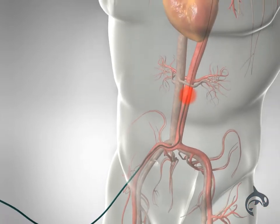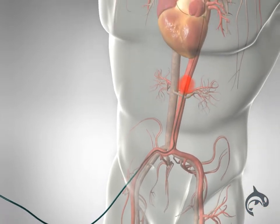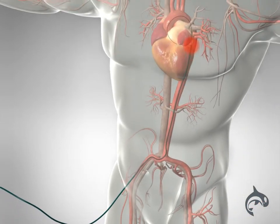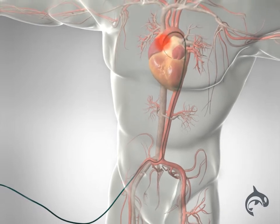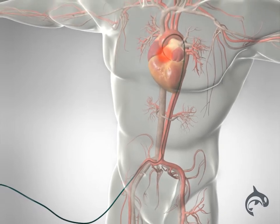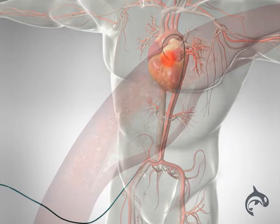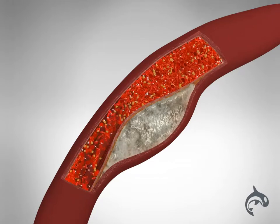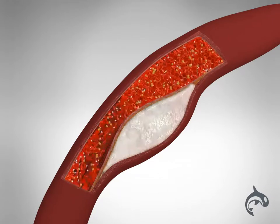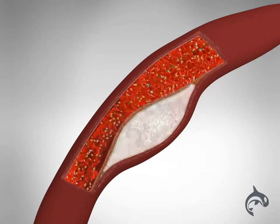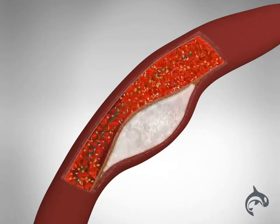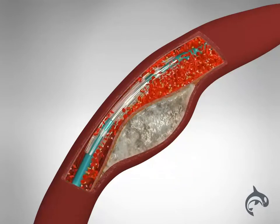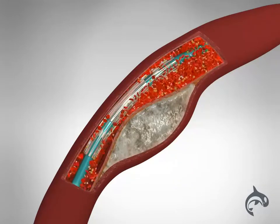An angioplasty and stent placement opens blocked arteries. The procedure requires a cardiac catheterization. Now we're inside a heart artery. Here's the plaque that's blocking the flow of blood. And here comes the catheter — it has a balloon at its tip.